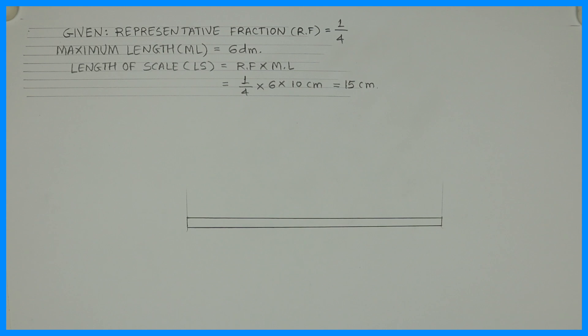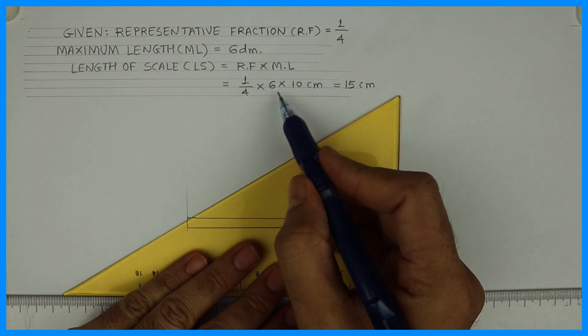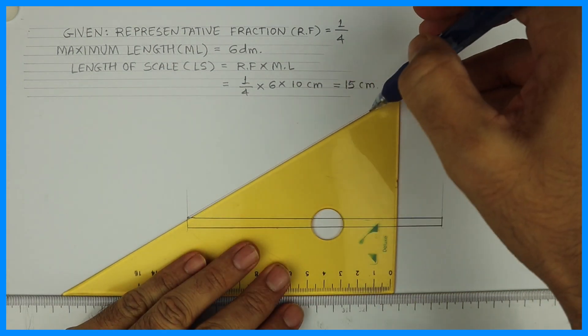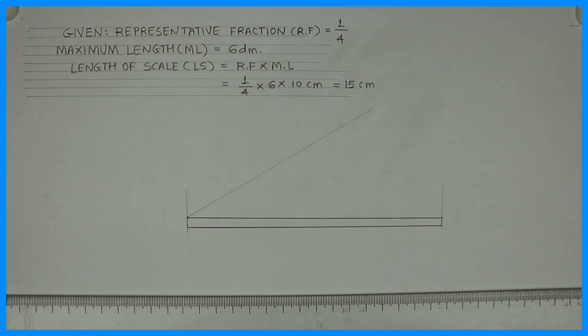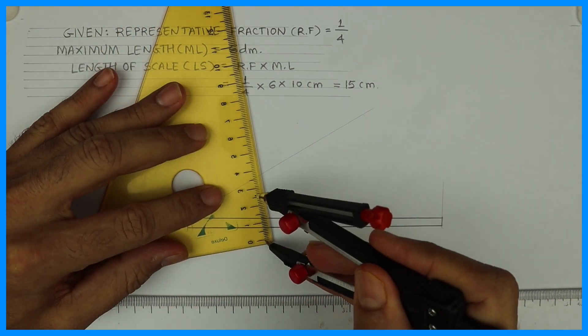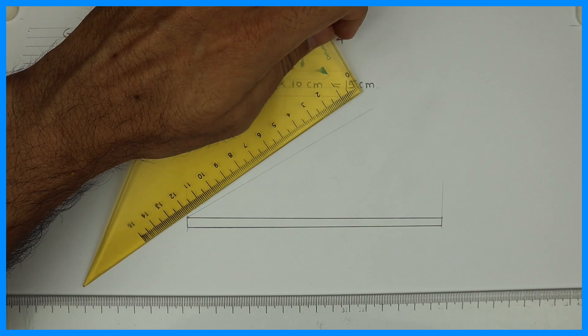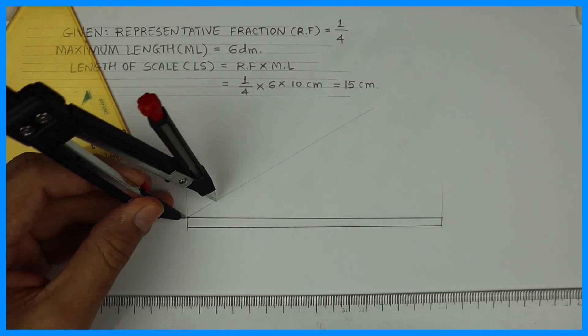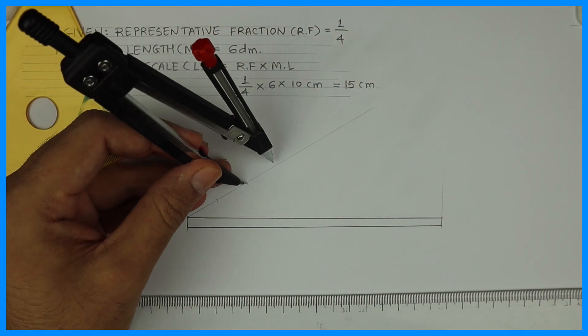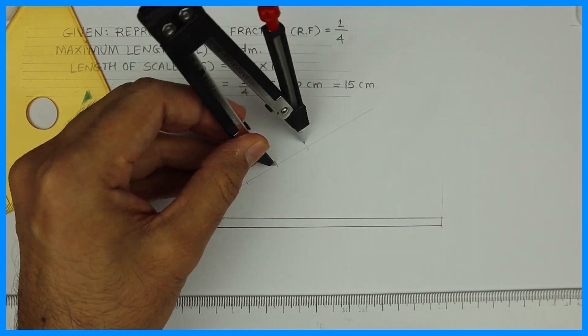So this is 15 centimeter which is equal to 6 decimeter. So I need to divide into how many parts? 6 part. Always remember length of scale will divide according to maximum length. Now in this case maximum length is 6. So I will take 30 degree and I will take 22 centimeter arc and I will cut how many times? 6 times.